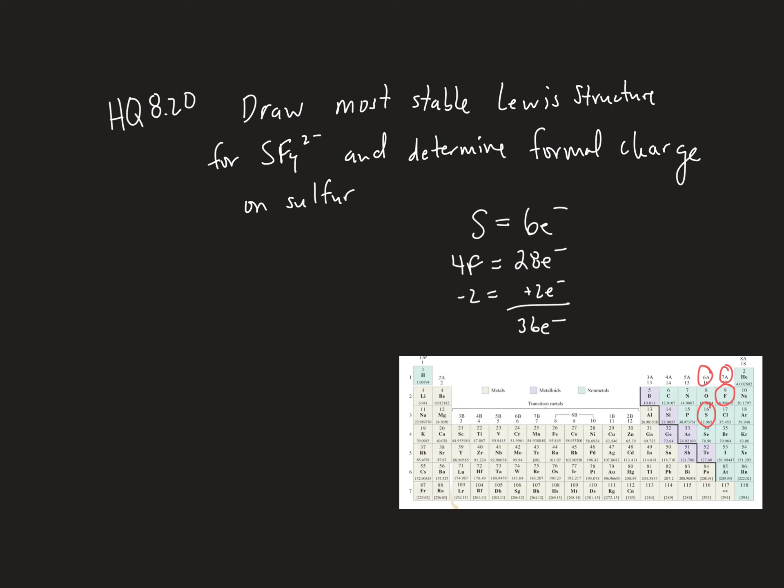We're going to put sulfur in the center, and then we've got 4 fluorines. So 1, 2, 3, 4 fluorines there. So we had 36 electrons. I just assigned 8 electrons as bonding electrons. So that means we've got 28 electrons left.